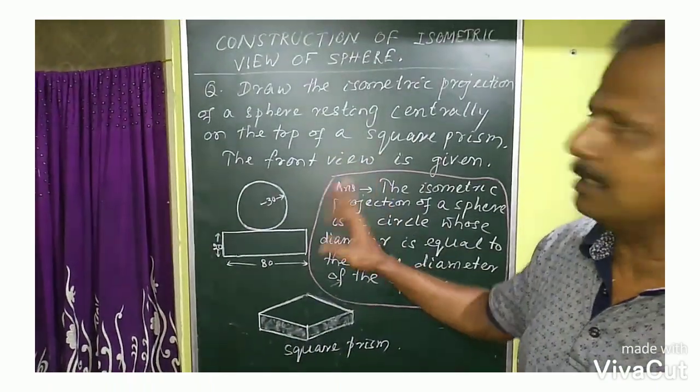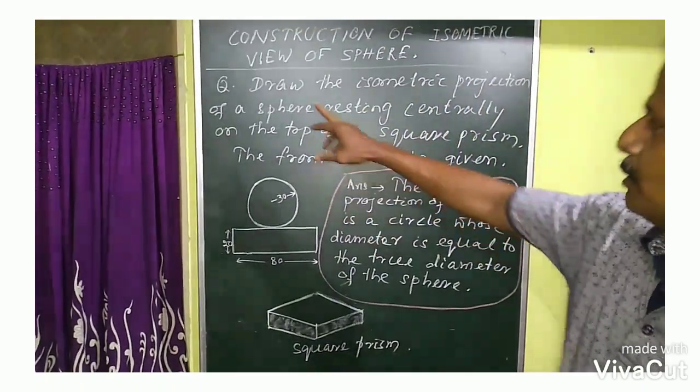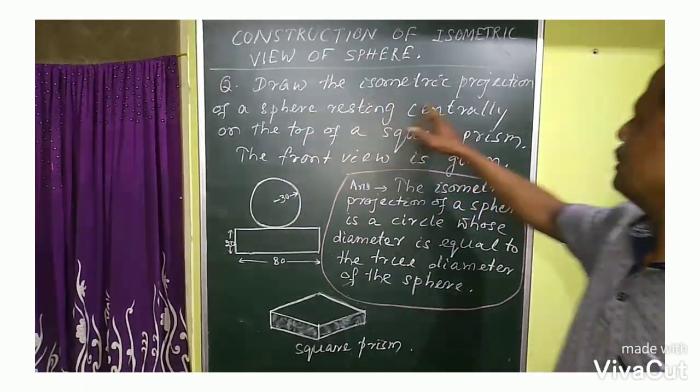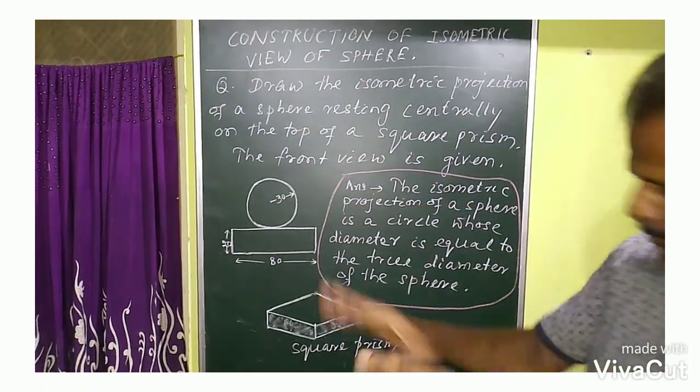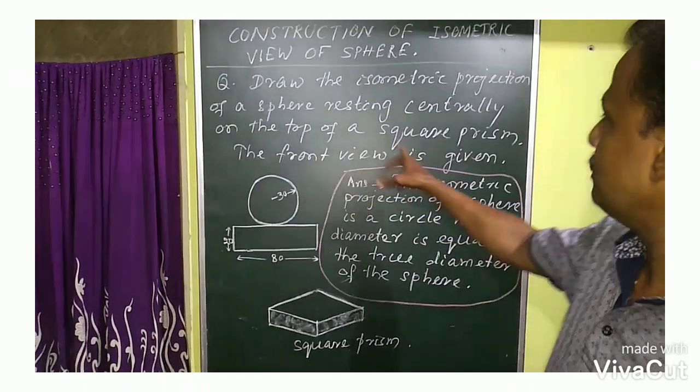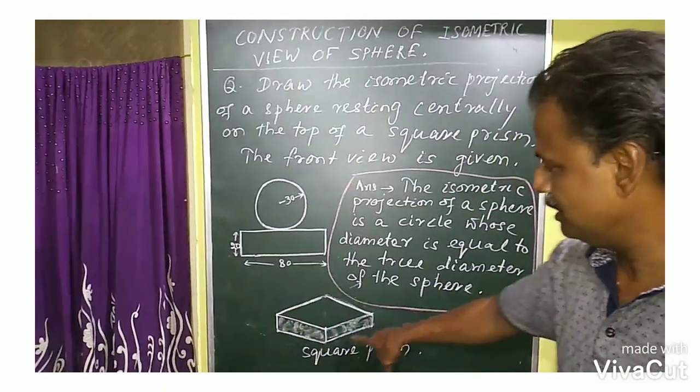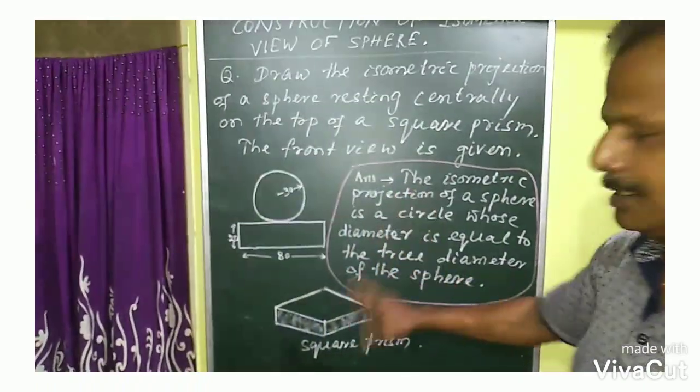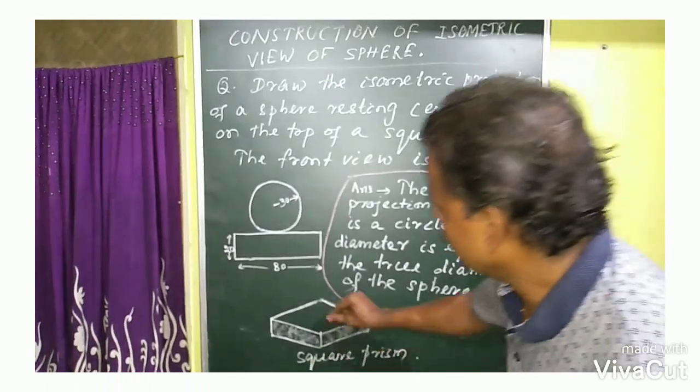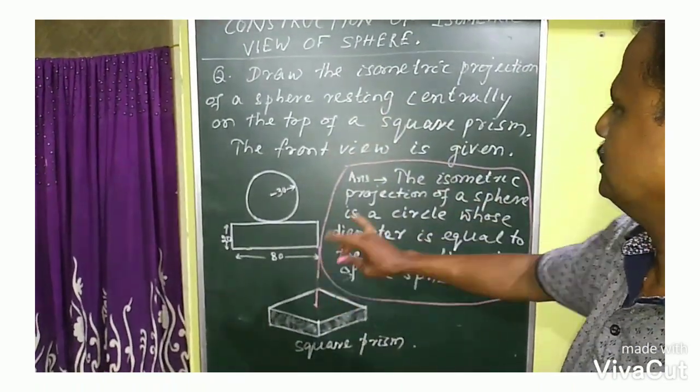Looking at the construction of the isometric view of a sphere. The question is: draw the isometric projection of a sphere resting centrally on the top of a square prism. A square prism has length and thickness. The sphere is resting on the square prism.